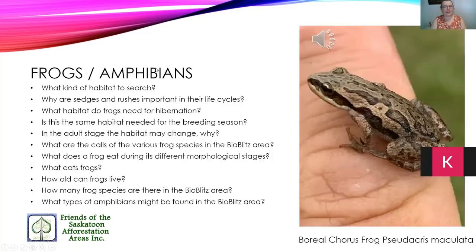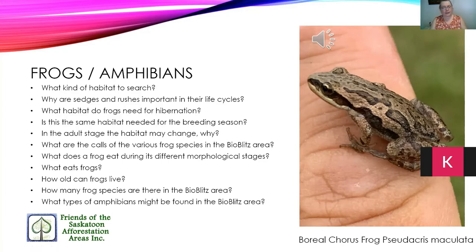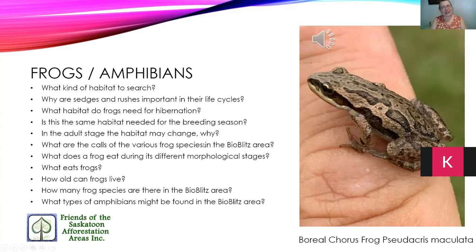Frogs and amphibians are usually indicator species because they leave an ecosystem quickly if conditions aren't good for them. Different frog species have different calls you might hear in a bio blitz area. In younger stages, frogs and amphibians need sedges and rushes for protection and food; as adults, woodland frogs move more toward woodlands and meadows. Delving into nature and iNaturalist opens up a whole world of curiosity — it just expands once you start learning.